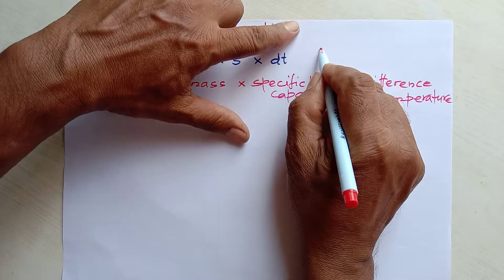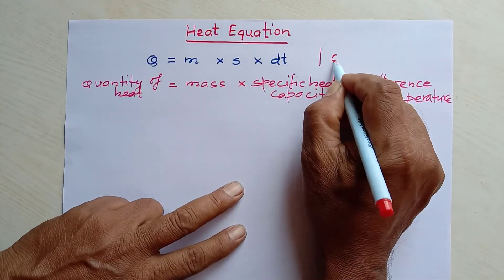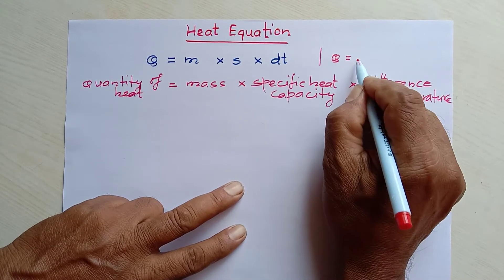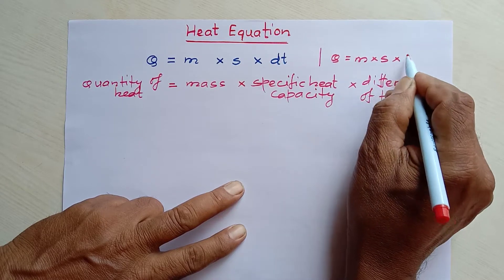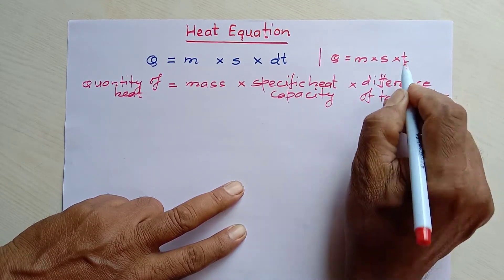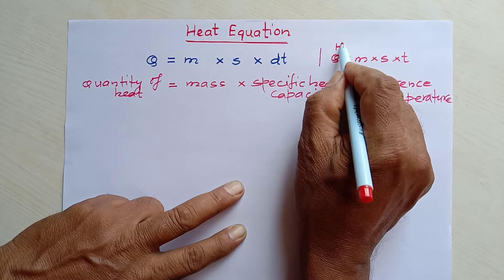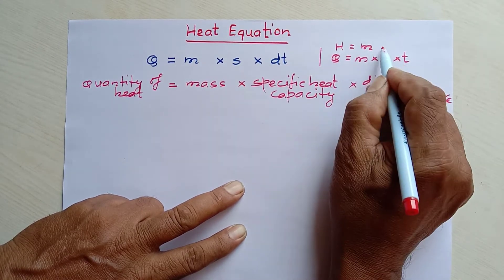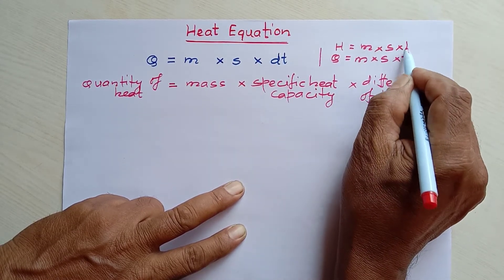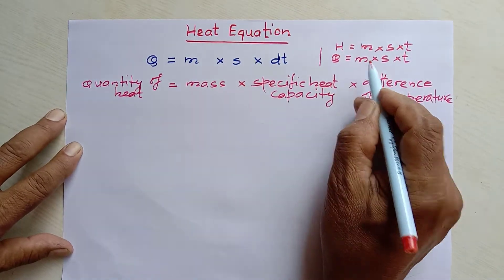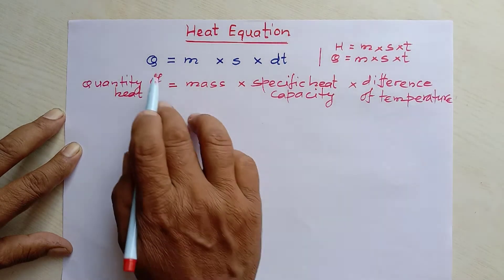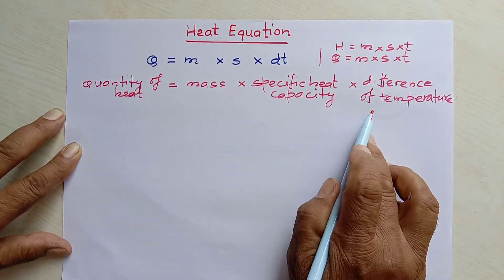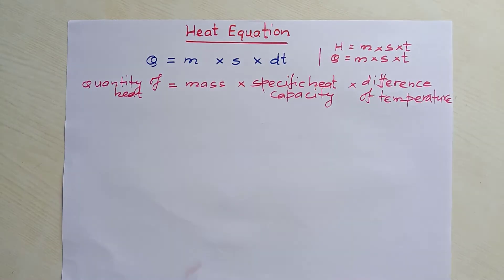Sometimes this equation may also be written as q equal to m into s into t. This is the symbolical representation of the heat equation, and the word form is the word representation of the heat equation.